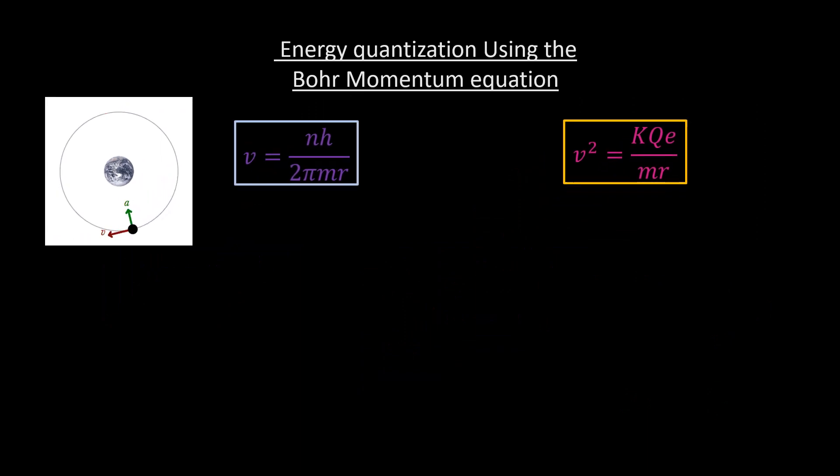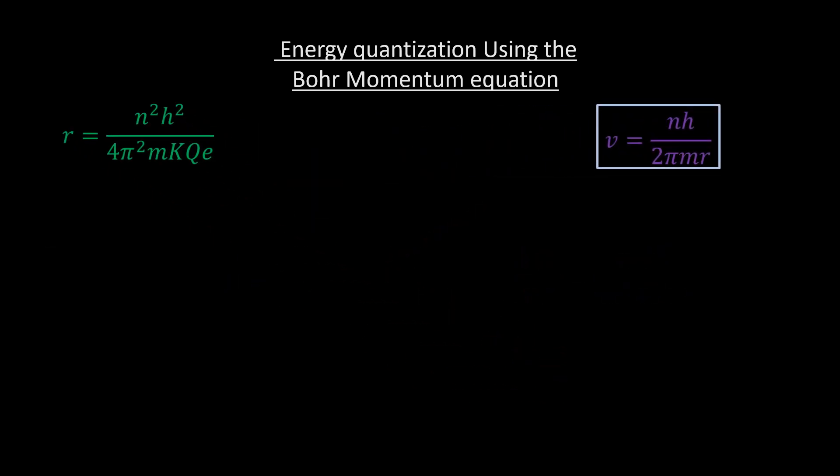Squaring v produces the following blue equation. And equating the v squares produces the following equation. Now the equation contains only one variable, which is r, and rearranging produces r equal to this. Apart from n, which is a positive integer that can take different values, every other thing is a constant, and so we can write r equal to n squared times r0, where r0 is equal to this.